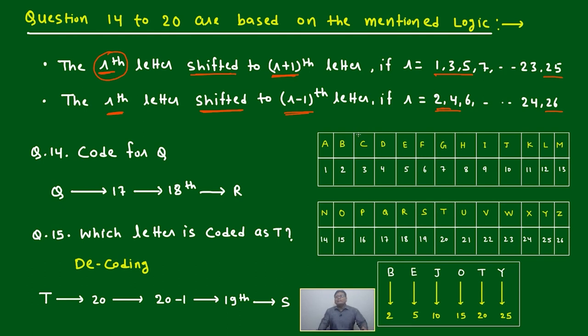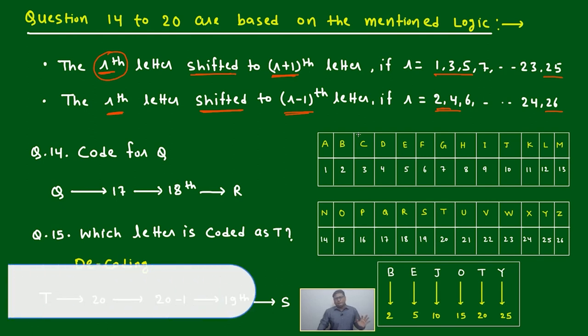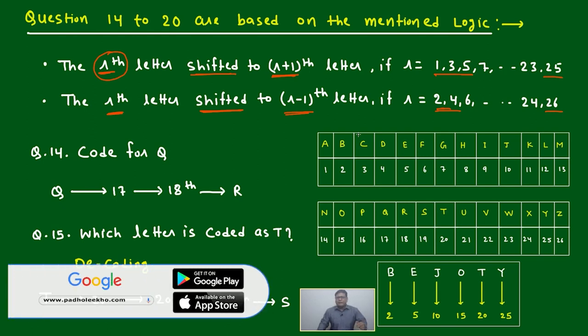Whatever your position is, either you can go +1 or you can come -1. Only these two things will happen. One thing we have to check: is it odd or even? If it is odd, you jump by one. If it is even, you go back by one.